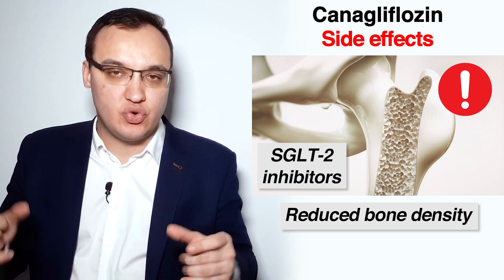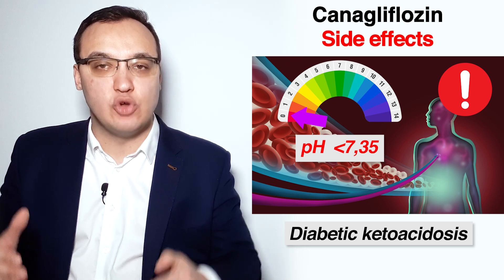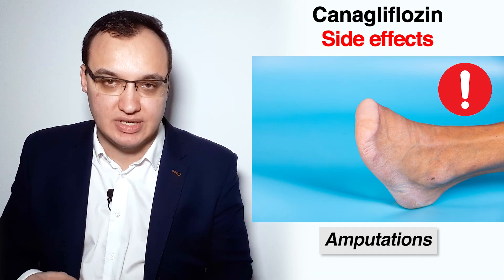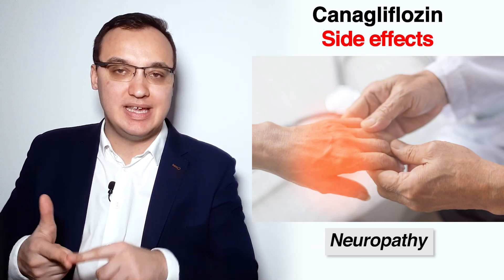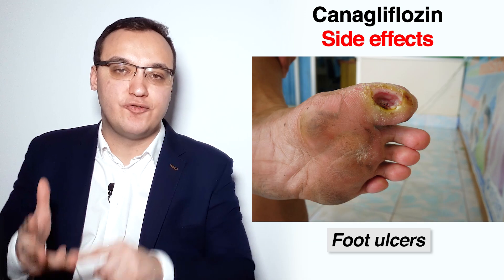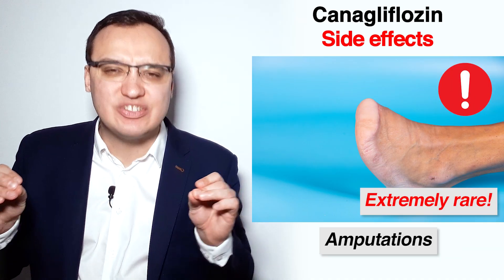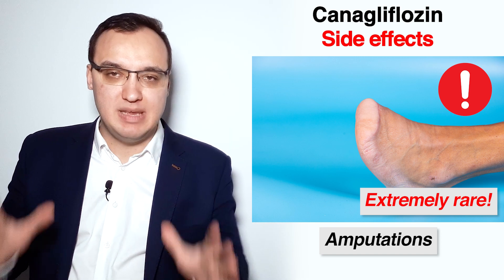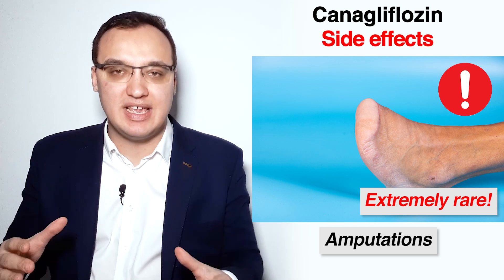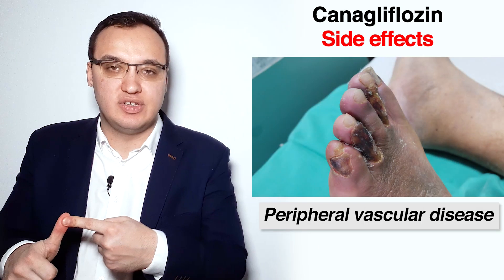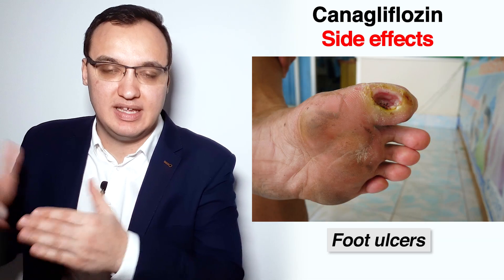Canagliflozin also has the highest risk of diabetic ketoacidosis, which is a pH of less than 7.35. It also has the highest risk of amputations in patients with significant risk factors, namely peripheral vascular disease, neuropathy, foot deformity, or any history of foot ulcers. It is important to note that amputations are extremely rare in normal people, but the risk increases with severe peripheral vascular disease, neuropathy, foot deformity, or history of foot ulcers.